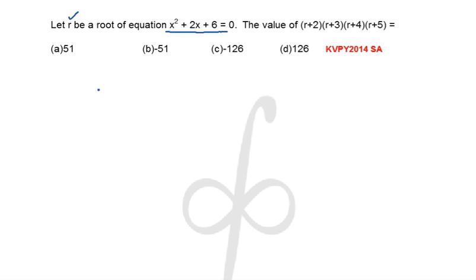We can easily claim that in place of x, I can substitute the value of r. That is, in place of x I can write down r, so r² + 2r + 6, this is going to be 0.